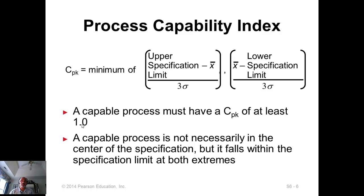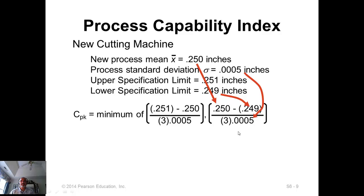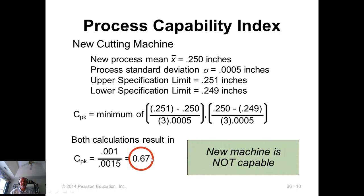The superior standard for a six sigma process is 2. Here is an example: take the upper specification limit to the midpoint divided by three times the standard deviation, and then x-bar minus the lower specification limit divided by three times the standard deviation. You select the minimum, and this gives 0.67, which means the process is not capable.